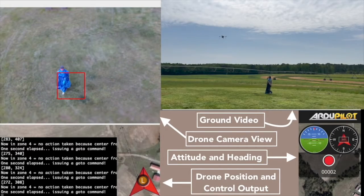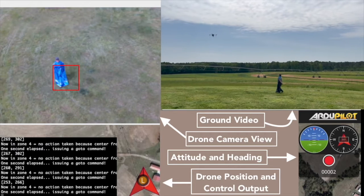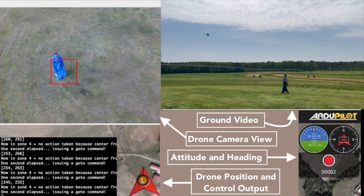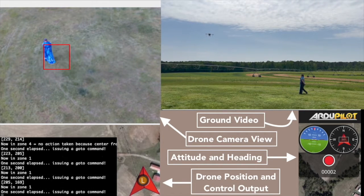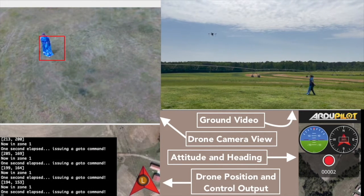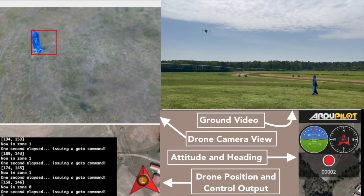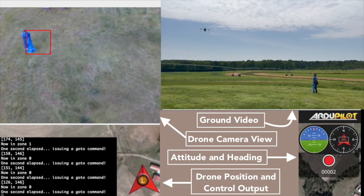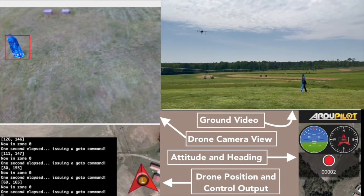Our objective was to use a drone to visually track a target as it moved around on the ground. Our overall approach was to mount a webcam at a 45-degree angle facing downwards and keep the drone at a constant altitude and always facing north.